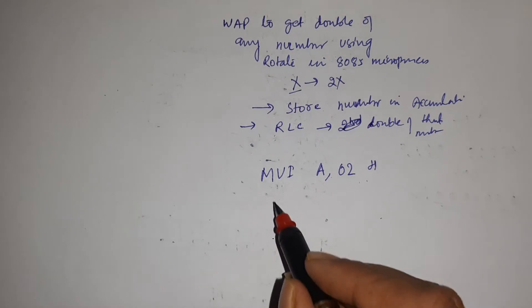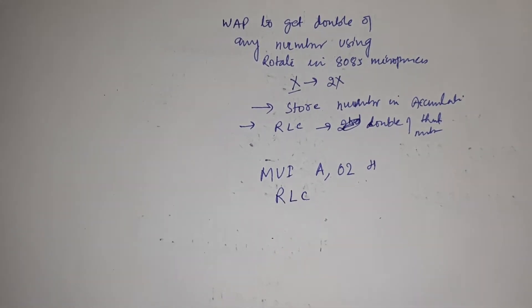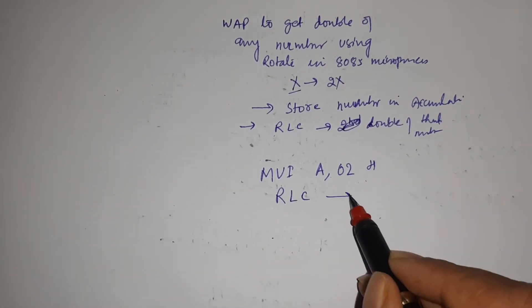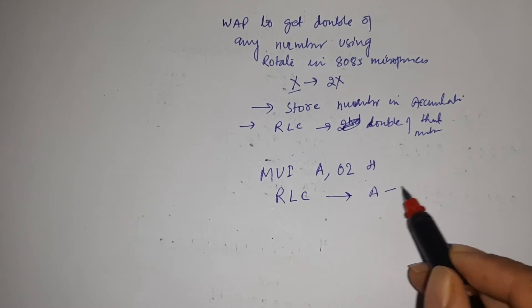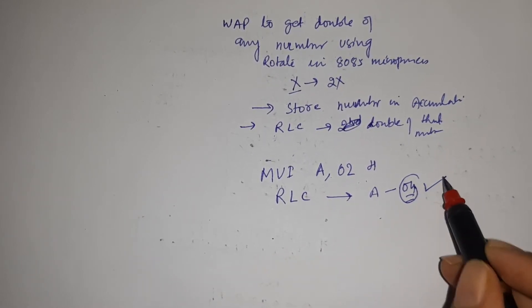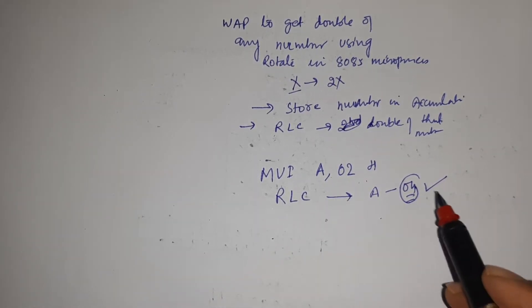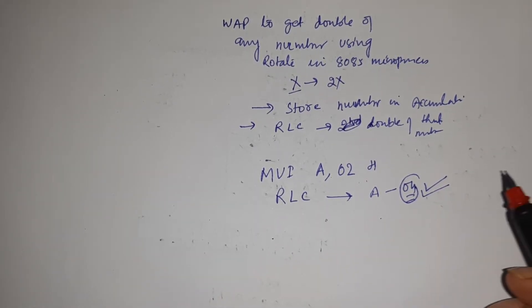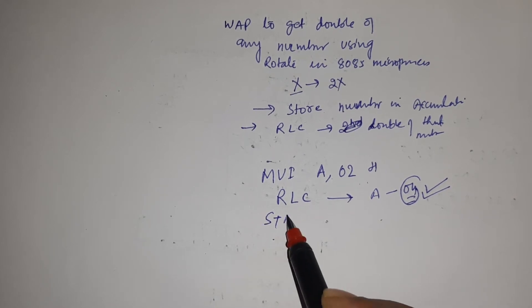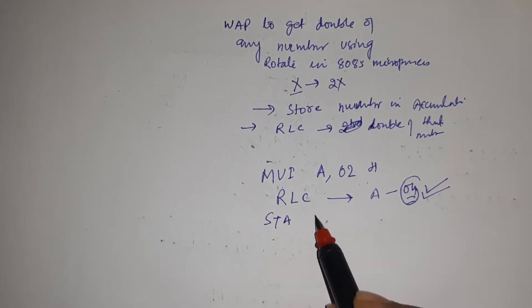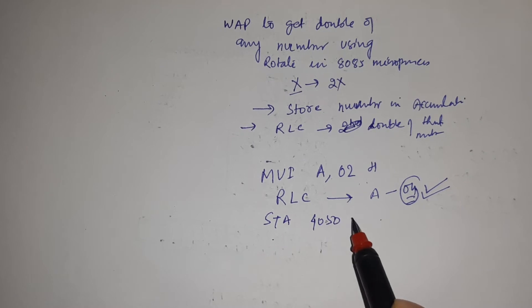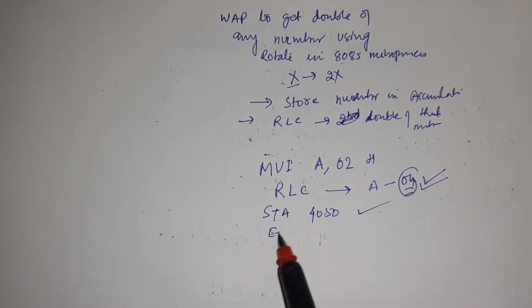Now you have to apply RLC only one time. After this, the content of A will be 04 and now you can store output wherever you want. If you want to store in accumulator, by default this is stored in accumulator. If you want to store at any specific memory location then by using STA you can store and here end the program.